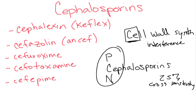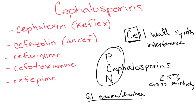Two other side effects of cephalosporins: one is GI effects — nausea, vomiting, and diarrhea. With all antibiotics, if in doubt, they probably have a GI side effect, because all antibiotics will decrease gut bacteria. When good gut bacteria decrease, other bacteria will overgrow and you'll get diarrhea.